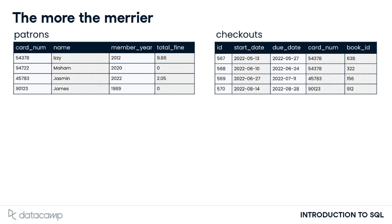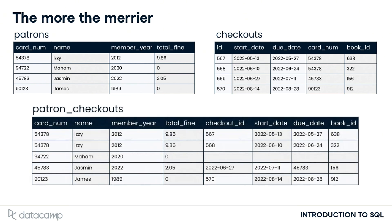Having more tables, each with a clearly marked subject, is generally better than having fewer tables where information about multiple subjects is combined. Here's what our patrons and checkouts tables would look like if we tried to combine them. It's the same data, but much less clear because it now contains duplicate information. While we can see that Izzy has two checkouts and Maham has none, the cardnum column is no longer unique because of Izzy's multiple checkouts. We can always use SQL to gather information from multiple related tables and connect them if a question requires it, but table topics should remain separate.